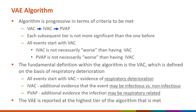The fundamental definition within the algorithm is the VAC definition, defined on the basis of respiratory deterioration. Even in circumstances where an IVAC is detected, the event still met the VAC definition — there is just additional evidence that the event may be infectious in nature as opposed to non-infectious. And when PVAP is met, there is some indication that the VAC event may be related to an infection of the lower respiratory tract.